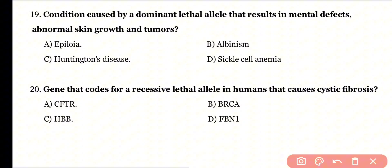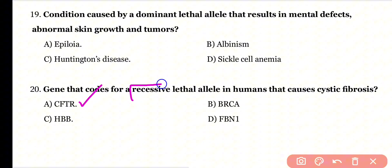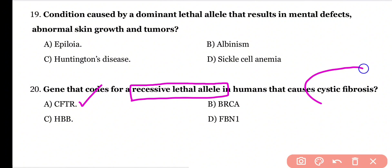Question 20: Which gene codes for a recessive lethal allele in humans that causes cystic fibrosis? Options: CFTR, BRCA, HBB, or FBN1? Correct answer is option A. CFTR is the gene that codes for a recessive lethal allele responsible for cystic fibrosis disease.